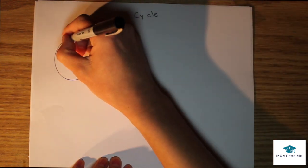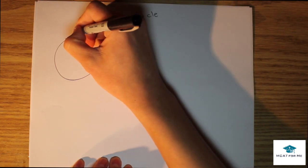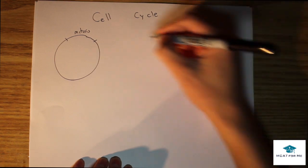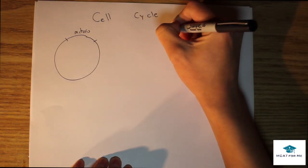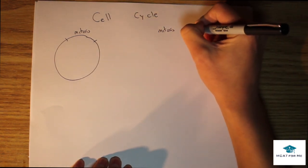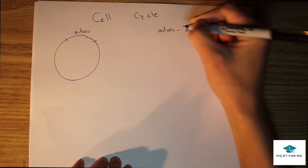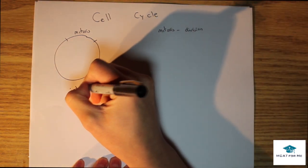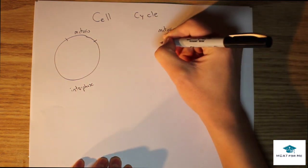For most of us, we know that the cell cycle has a step called mitosis which is the actual cell division. Then there's also something called the interphase. Interphase is everything else besides mitosis.